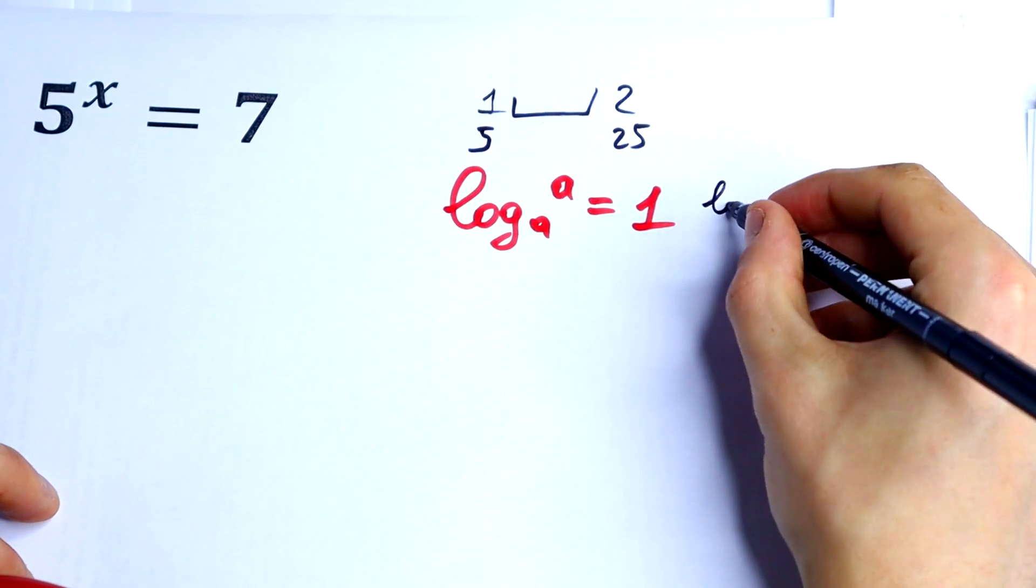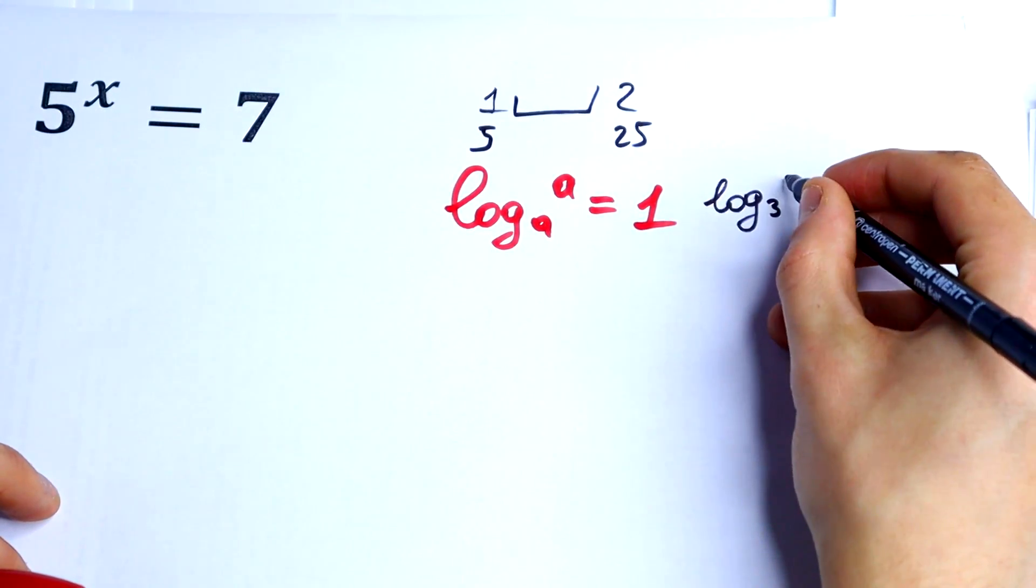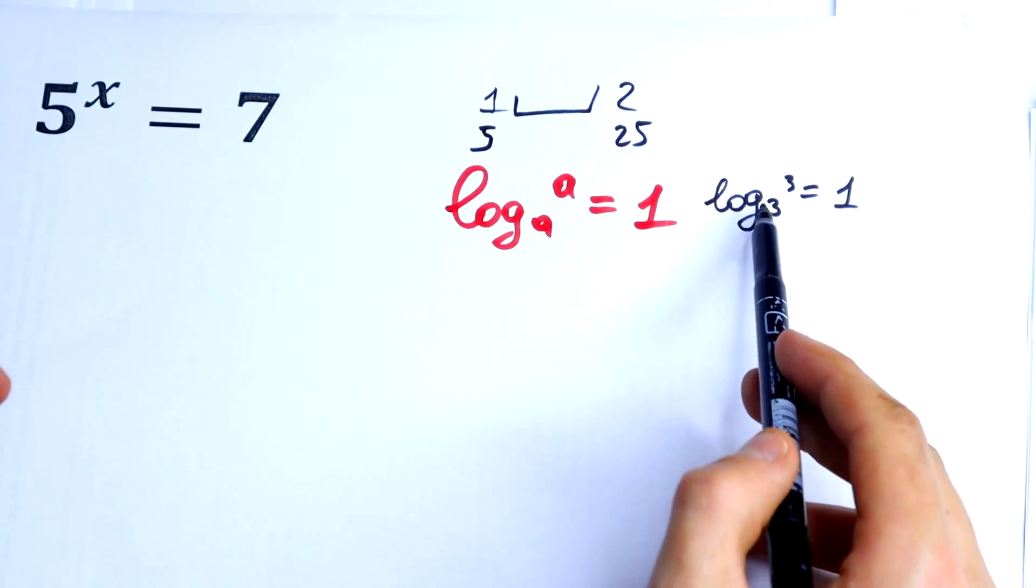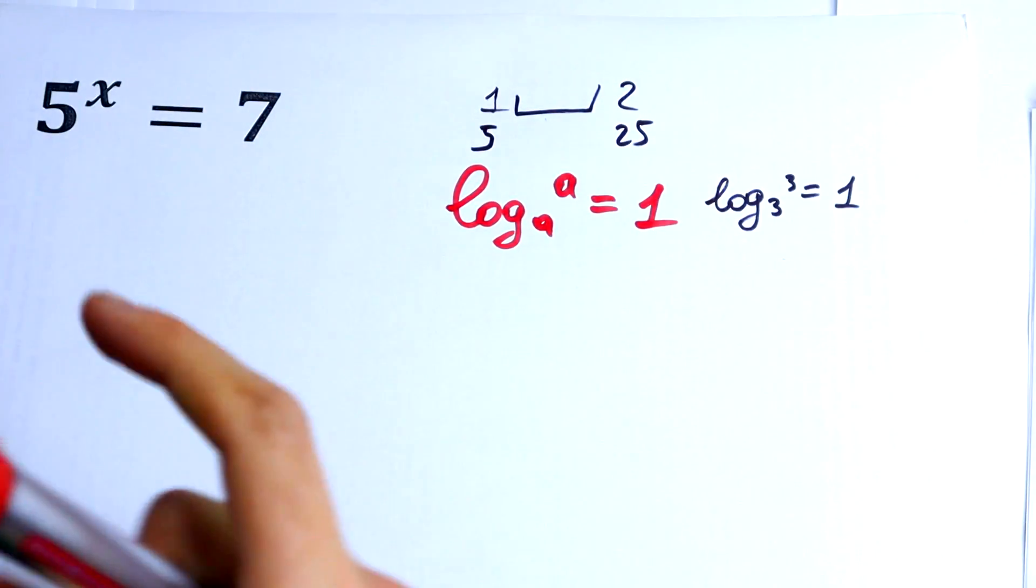For example, log base 3 of 3 equals 1, and it doesn't matter—5 and 5, 6 and 6, 7 and 7—it equals 1.